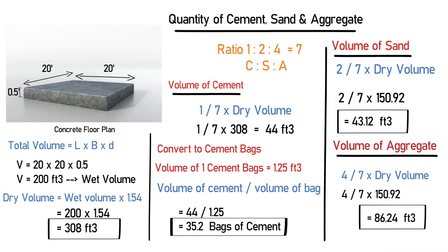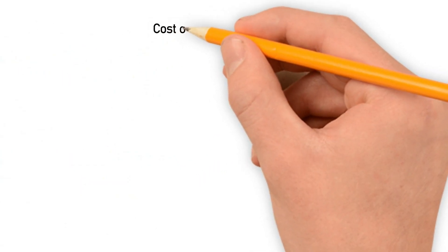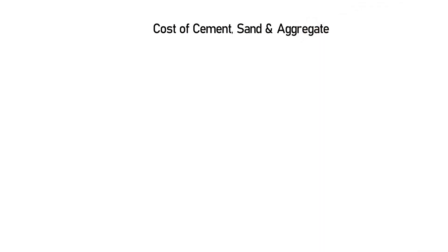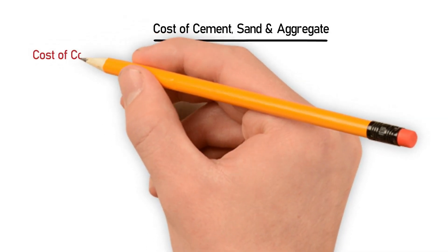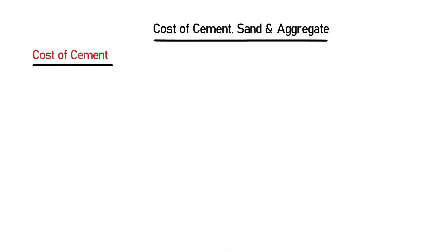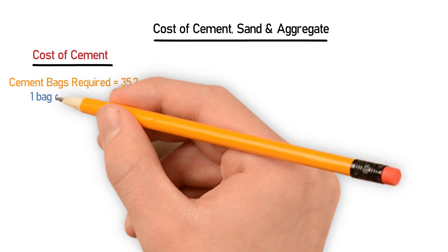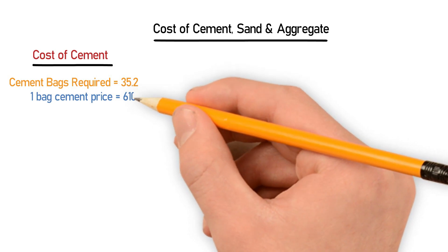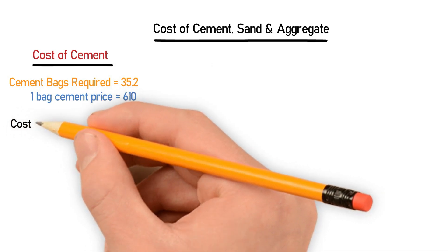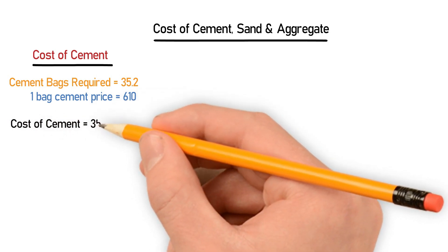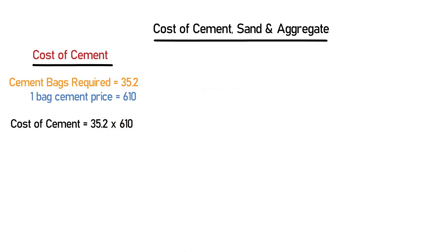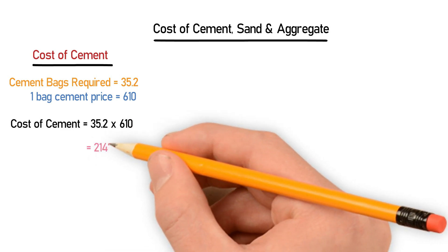After finding the volumes, let's calculate the cost of these materials. First, the cost of cement: we need 35.2 bags, and one cement bag price from the market is 610. So the cost of cement = 35.2 × 610.